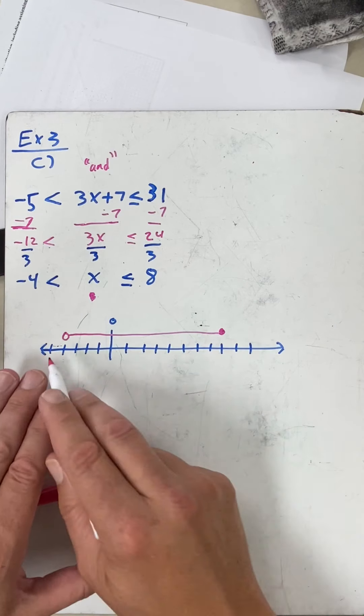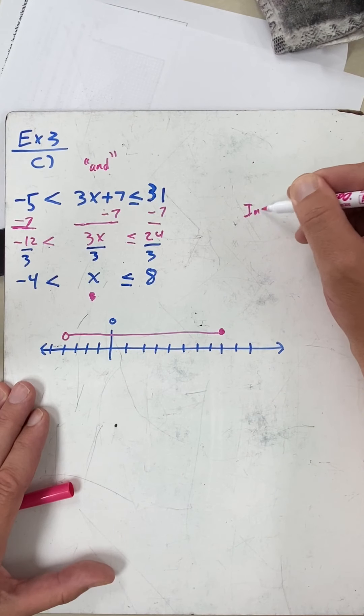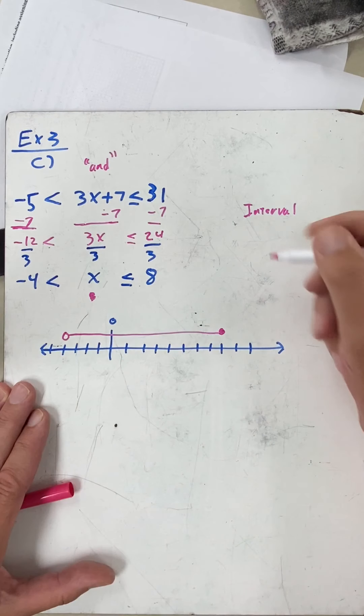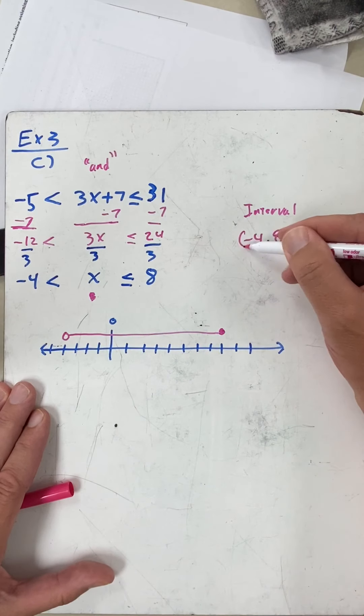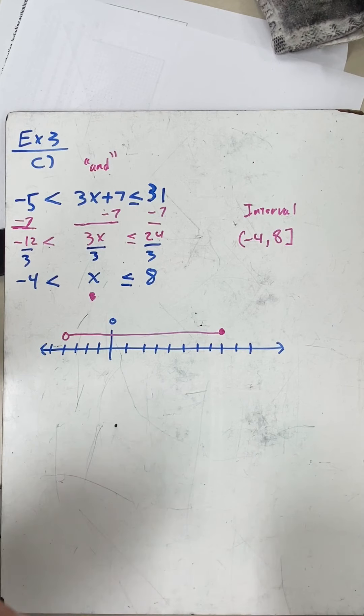Any number I pick in this area will make that true. Now once again for the interval notation, all we have to do is start on the left edge—negative four—go to the right edge—positive eight—and then just go bracket for the eight, open circle for the negative four. This will get you through the 3.1 assignment.